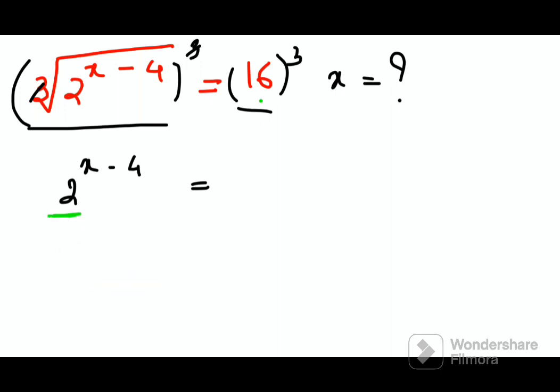Now please understand, since here the base is in the form of 2, I can write 16 as nothing but 2 raised to 4. Right? Why am I doing that? Because if the bases are same, your entire question changes and becomes very easy to equate the indices.